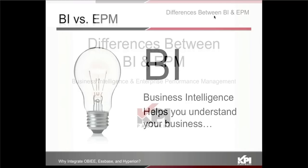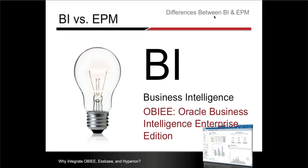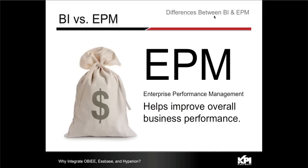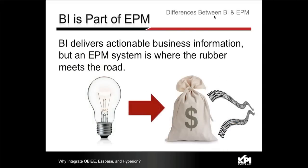The differences that really highlight BI versus EPM from a business perspective: BI helps you understand your business — what you have done. EPM really helps you improve your business processes. By bringing in that S-base component from Hyperion, it really enables BI to deliver actual business information. This is where the rubber meets the road — bringing those two pieces together so you can create that business process flow.